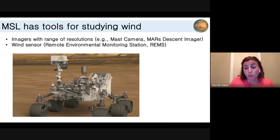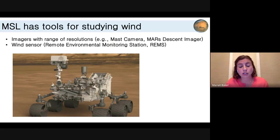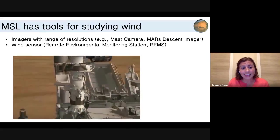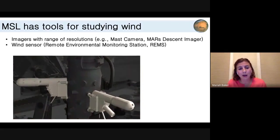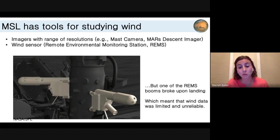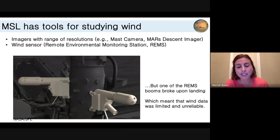The rover was equipped with imagers with a range of resolutions for change detection imaging, and also a wind sensor — the Remote Environmental Monitoring Station, or REMS instrument. Unfortunately, the REMS instrument has two booms and really needs both to accurately measure wind, and one of them promptly broke upon landing. That was a disappointment and meant wind data had to be carefully considered. So instead, we were going to rely on change detection experiments to probe the wind, as we had done before.